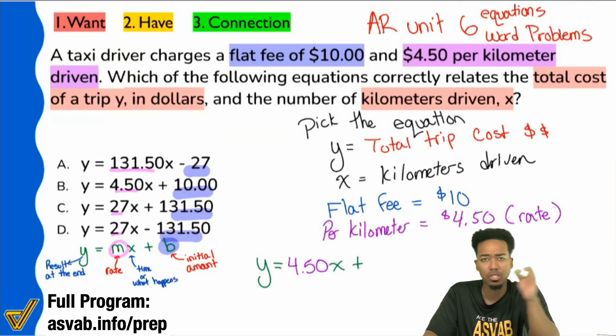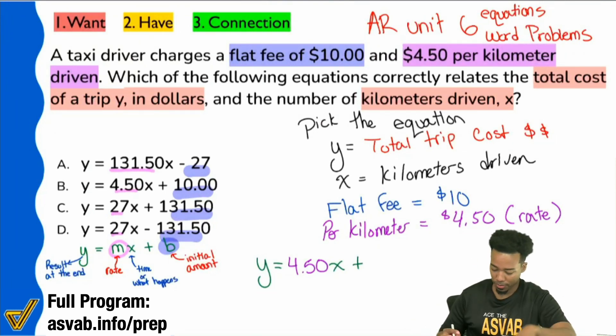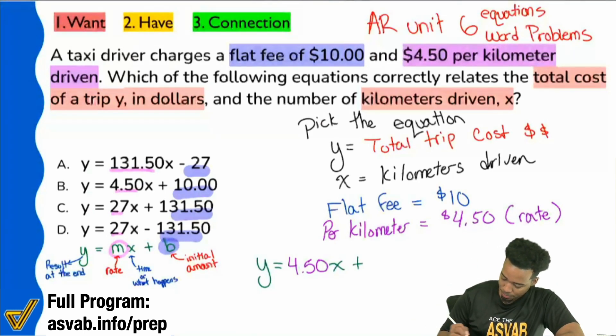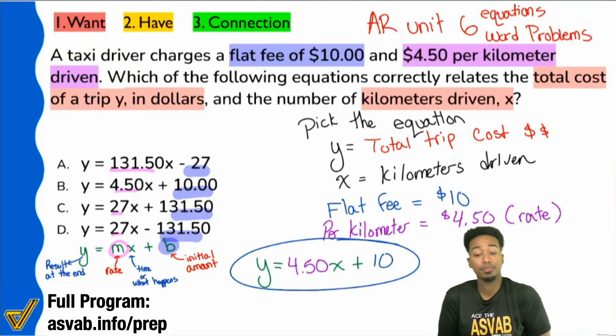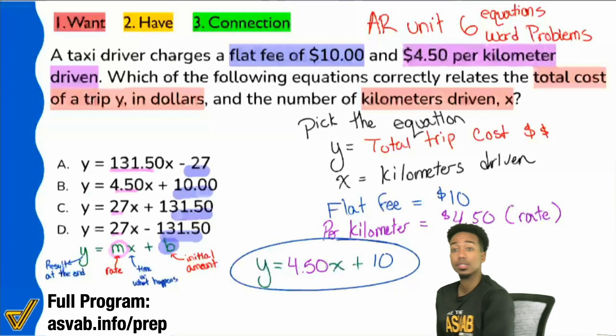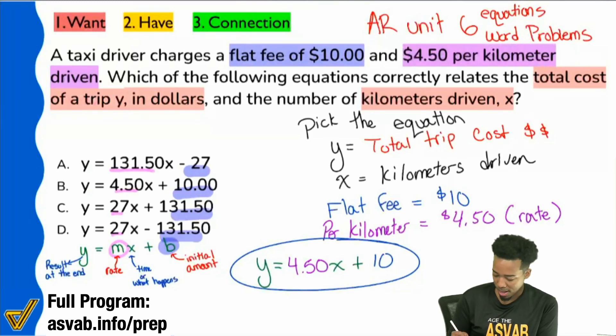So I hope that makes sense there. That's all he charges just to get in. And then every kilometer, 450. And so there we go. In a nice, easy, and kind of relaxed way. You don't have to include the dollar sign. But this is your formula right there. 450X plus 10, or in this case, 4.5, if that answer showed it. But your answer here is B.